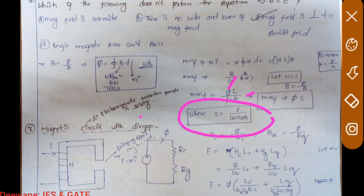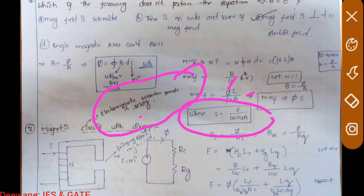A magnetic circuit with a single air gap could be a transformer with a small air gap, or you can relate this to the electromagnetic attraction principle used in relays. On AC supply, such relays get damaged quickly due to polarity changes causing oscillations. You can go and read that topic in power system under electromagnetic attraction principle.